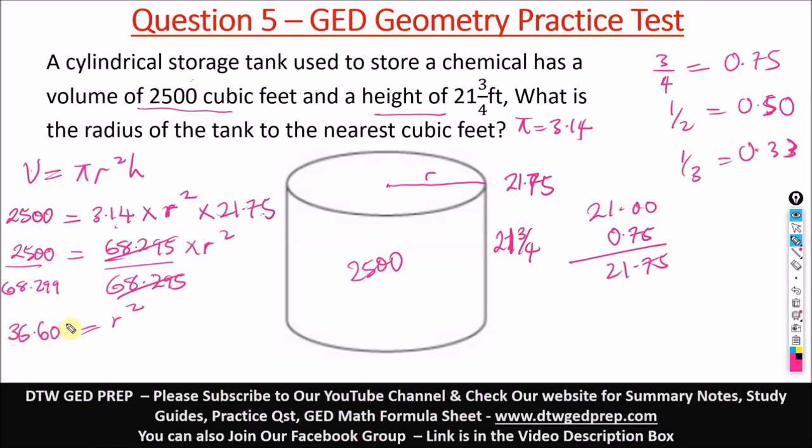So we're left only with r squared here. This divided by this would give us, punching your calculator—there's a calculator, there will always be calculator on your dashboard. For questions like this, calculator will be allowed. So it means r squared is equal to 36.60, and it says to the nearest cubic feet, so we're going to approximate very soon.